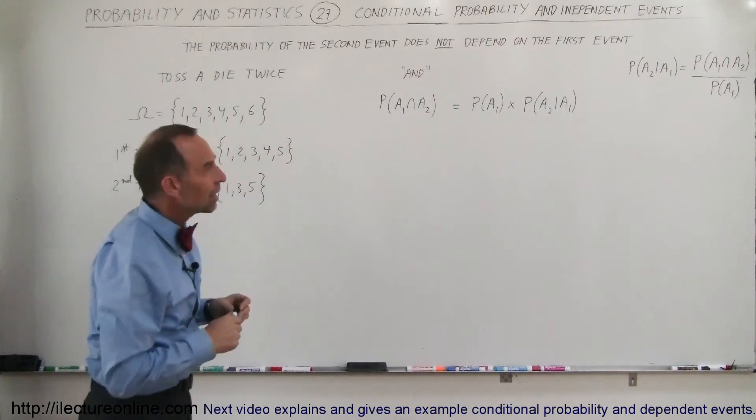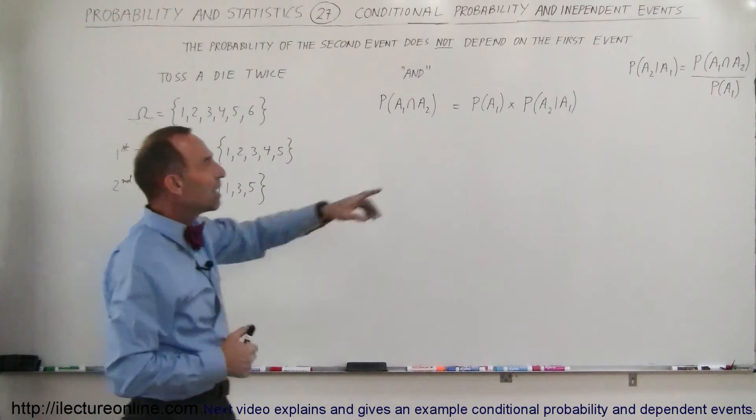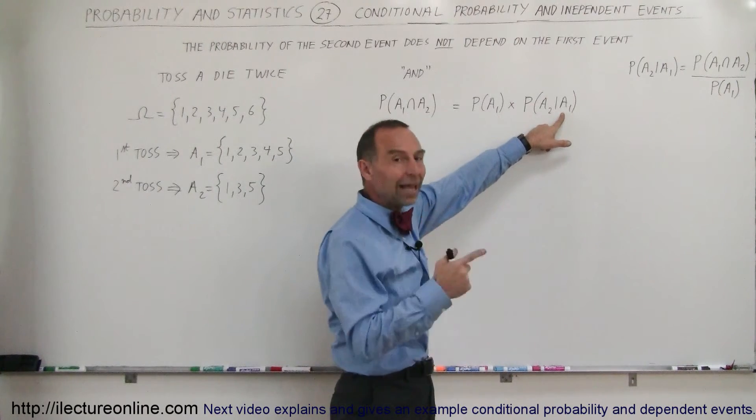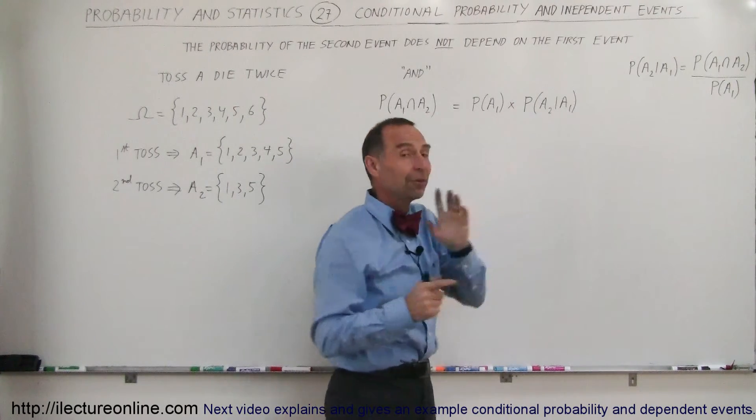Now what's a little bit different here is that the probability of A2, dependent upon event A1 having occurred, may not really have a dependence.